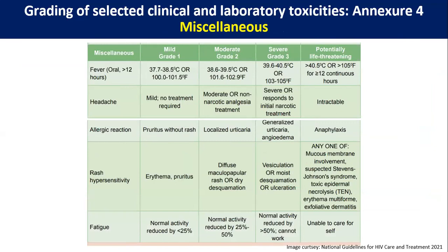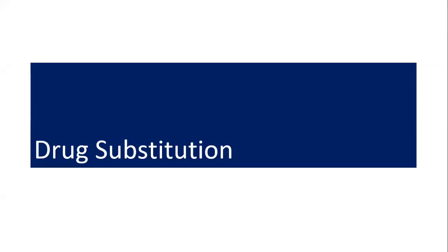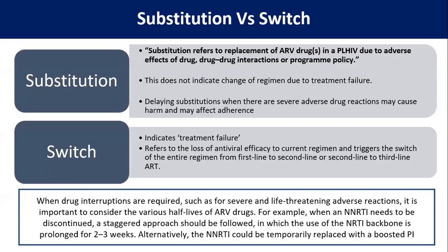Different symptoms have also been categorized into grades 1, 2, 3, and 4. We need to consult this table whenever we find such cases. Now, regarding drug substitution: if a single molecule is changed from within the same drug class, it is called a substitution, usually done for side effects. A switch means when treatment fails and the entire ART regimen is totally changed — that is, one from a new class and other molecules not previously experienced by the patient.